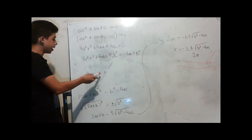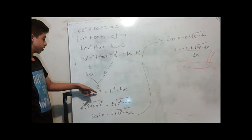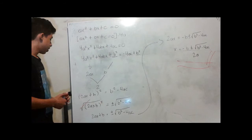The first is 2ax and the second one is b. Then we multiply this by 2. Then here we have 2ax plus b to the square.